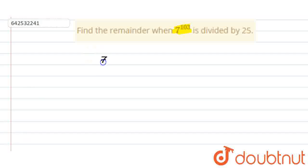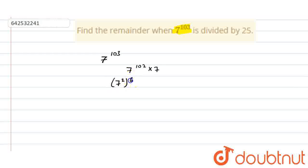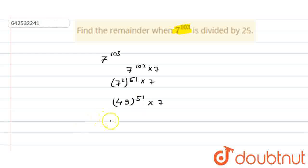The question is 7 raised to the power 103. I can rewrite this as 7 raised to the power 102 multiplied by 7, and now I can rewrite this as (7^2)^51 multiplied by 7, which gives us 49^51 multiplied by 7. Now I am letting 49 equal (50 minus 1) raised to the power 51.